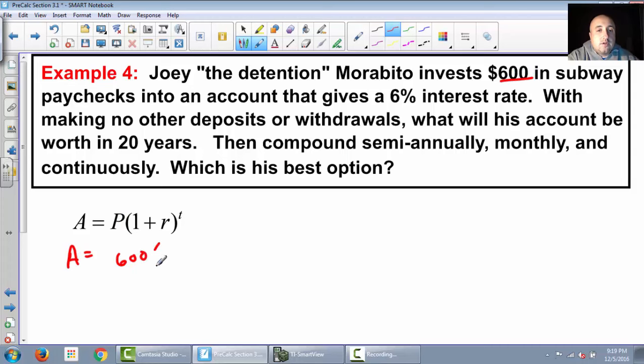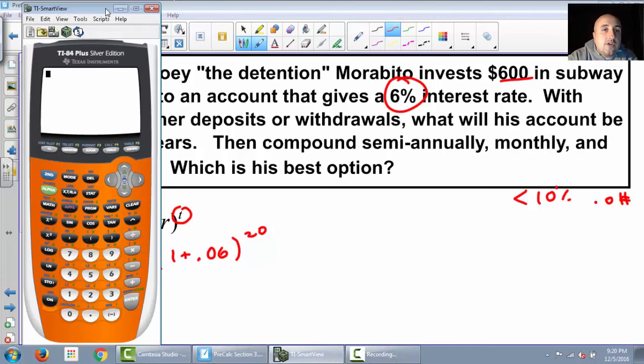So $600 times 1 plus what's R, the interest rate. Our interest rate is 6. Now, if you just do 6, that's wrong. It's got to be a decimal. It's 0.06. Remember, less than 10% is 0.0 and then the number. So less than 10%, this is 6, is 0.06. And then we're raising it to T, which is 20 years.